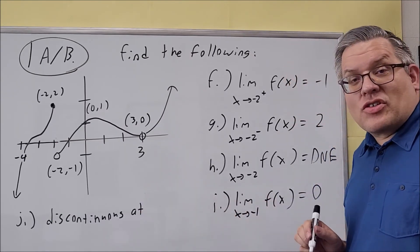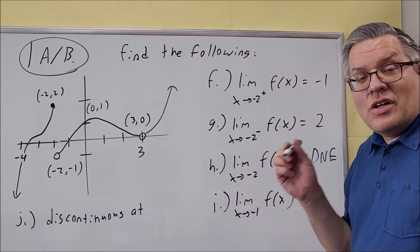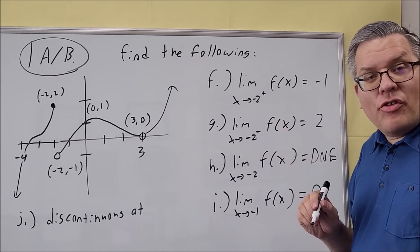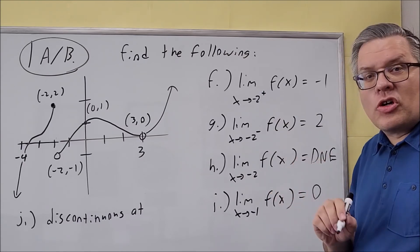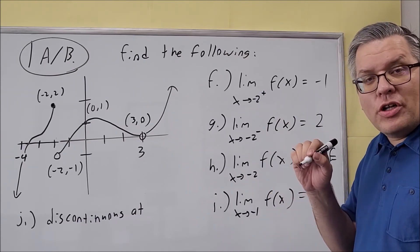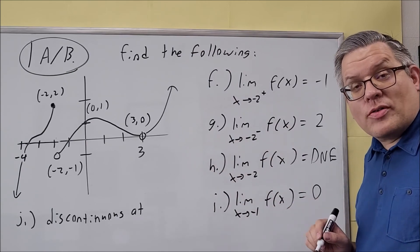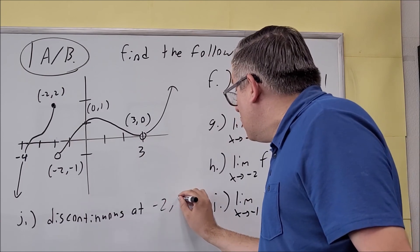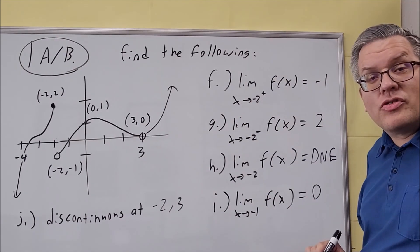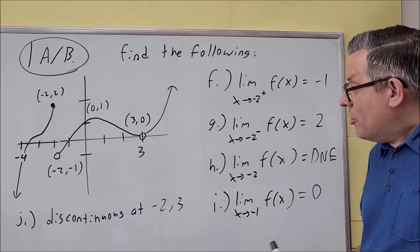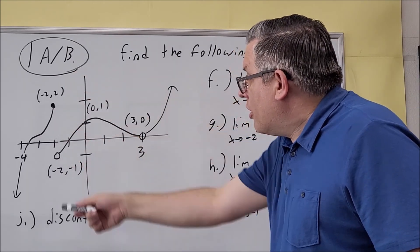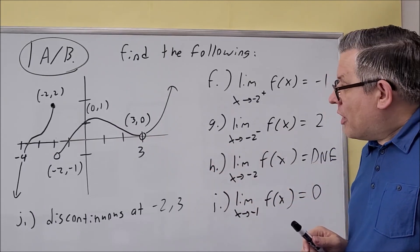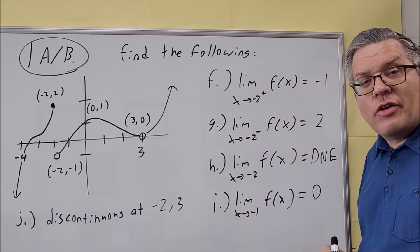For part j, find where the graph is discontinuous. The graph is discontinuous where there's a break or an open circle — anywhere you'd have to lift your pen off the paper to continue. There are two such places: x equals negative two and x equals three. There's a break at negative two and an open circle at three. Those are the only two discontinuities; the graph is continuous everywhere else.